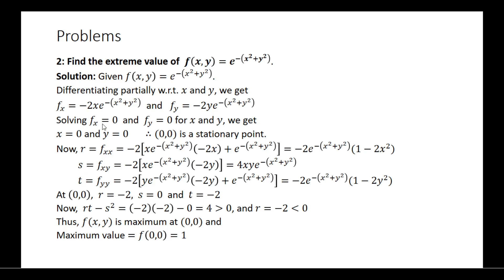Differentiate fx partially with respect to x again. Go for the product rule and simplify. You are going to get minus 2 e to the power of minus (x squared plus y squared) into (1 minus 2x squared).